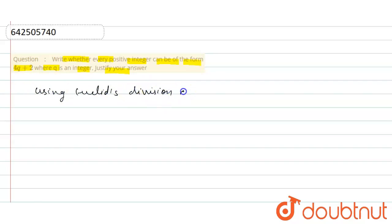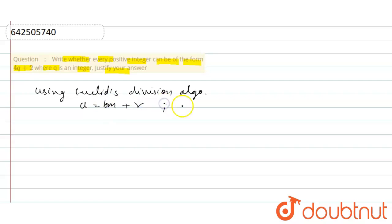So what we will note is: using the Euclidean Division Algorithm, that is A equals bm plus r, where r is between 0 and 4.